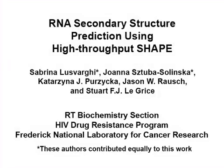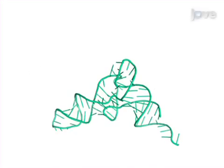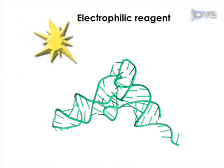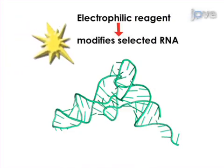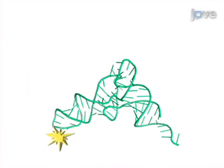The overall goal of this procedure is the prediction of RNA secondary structure with single nucleotide resolution. This is accomplished by first chemically modifying the folded RNA with an electrophilic reagent that acylates single-stranded or flexible regions of RNA. The second step is to use reverse transcription to detect sites of the RNA that have been chemically modified.